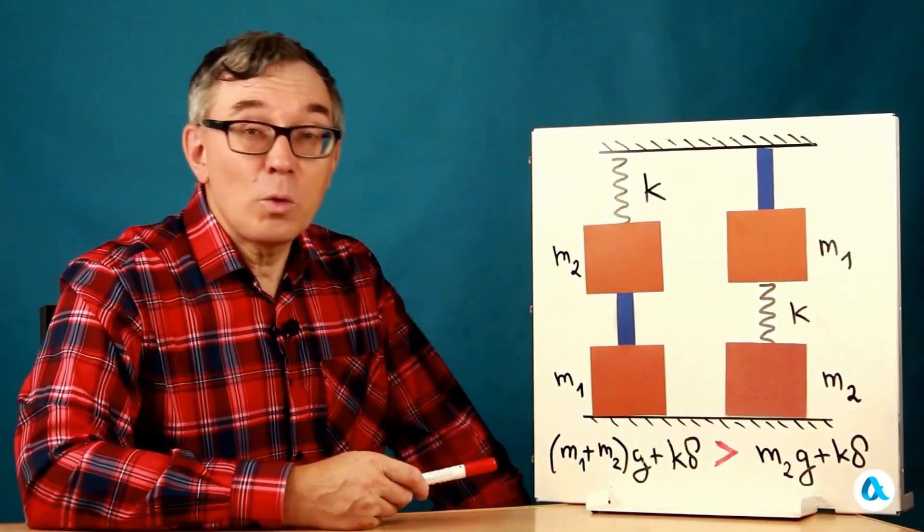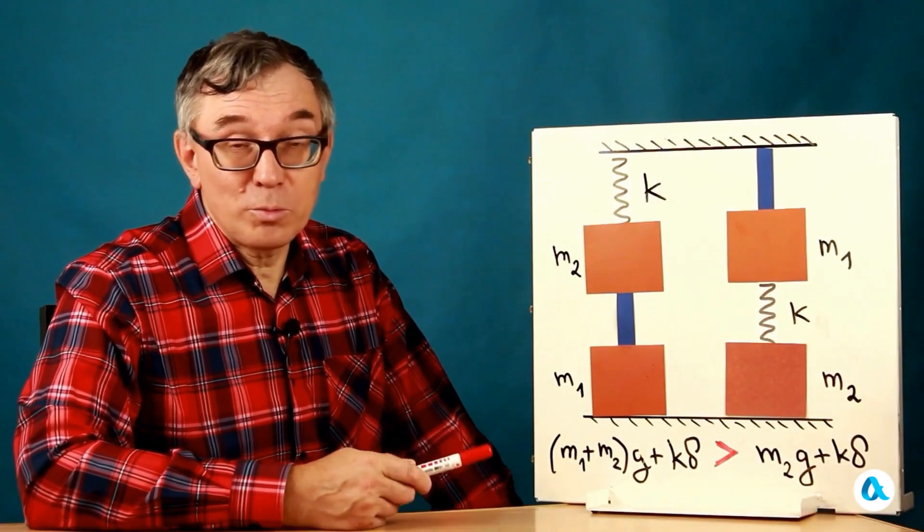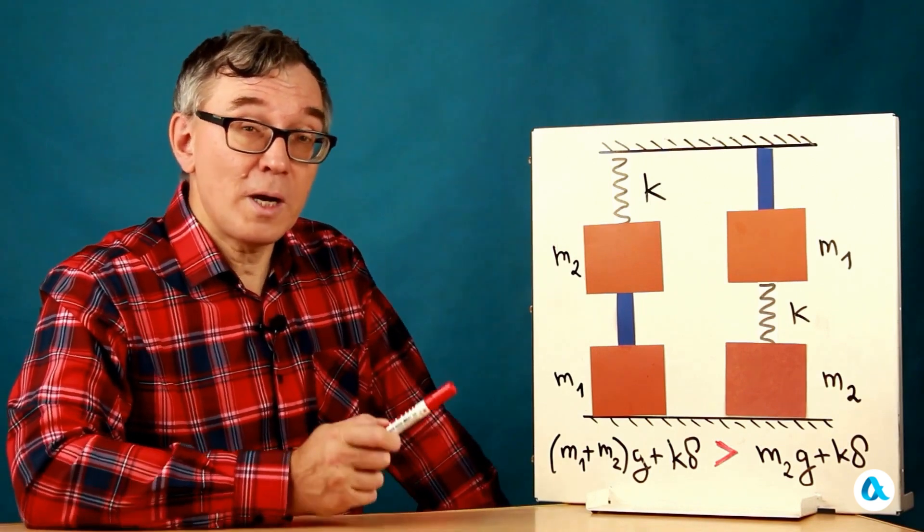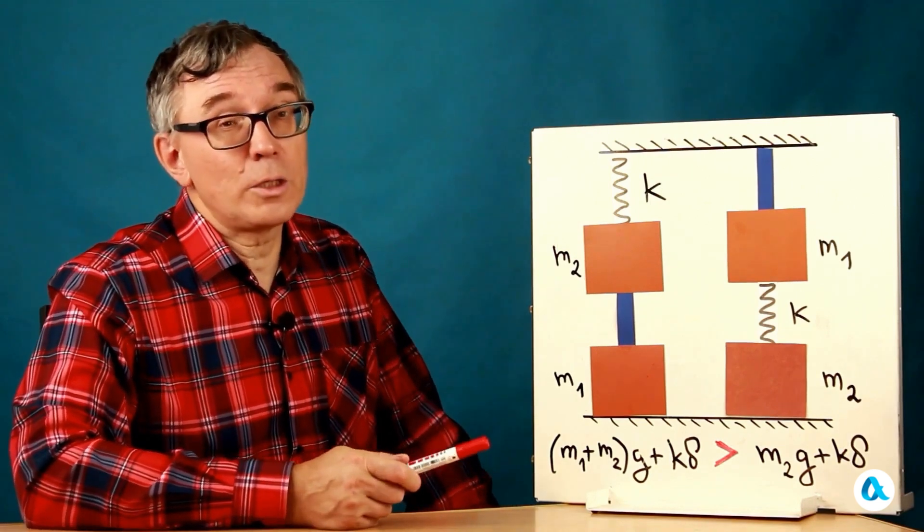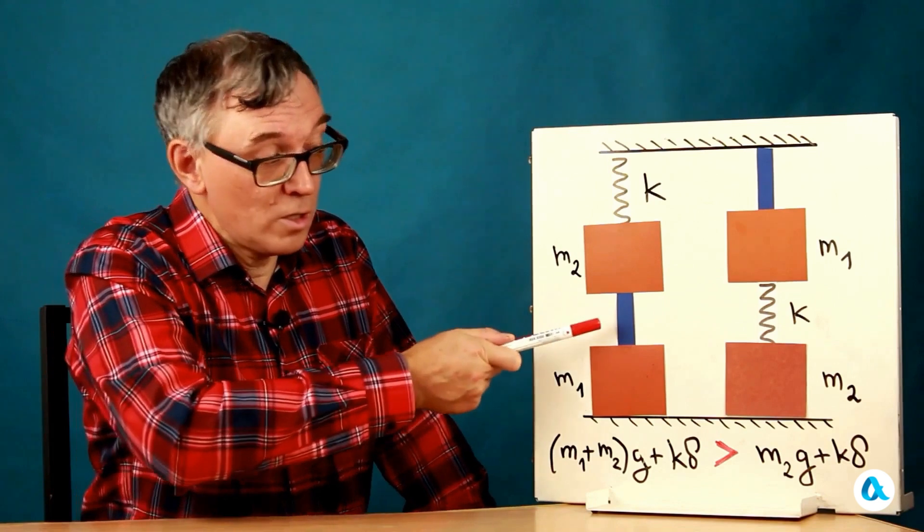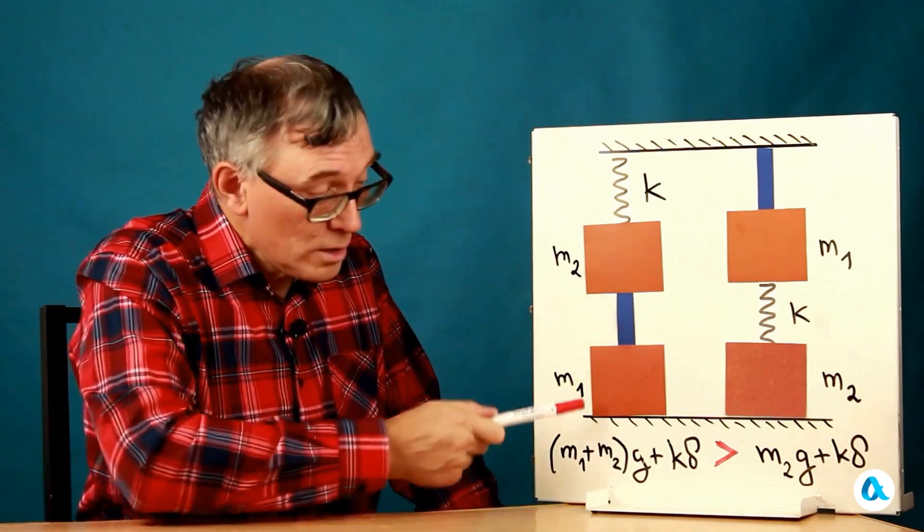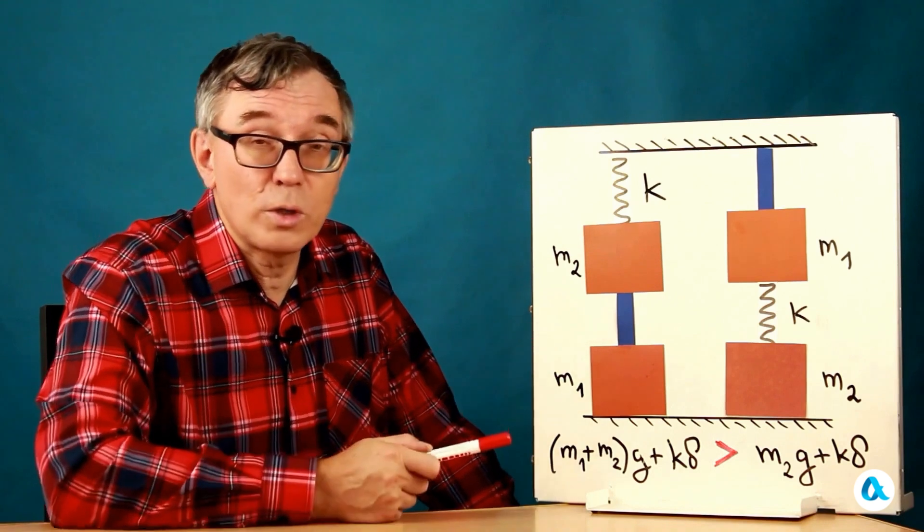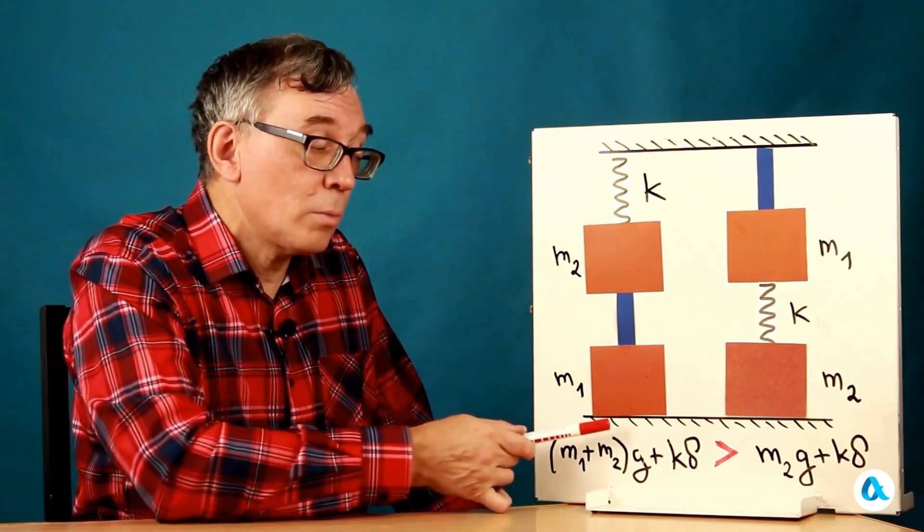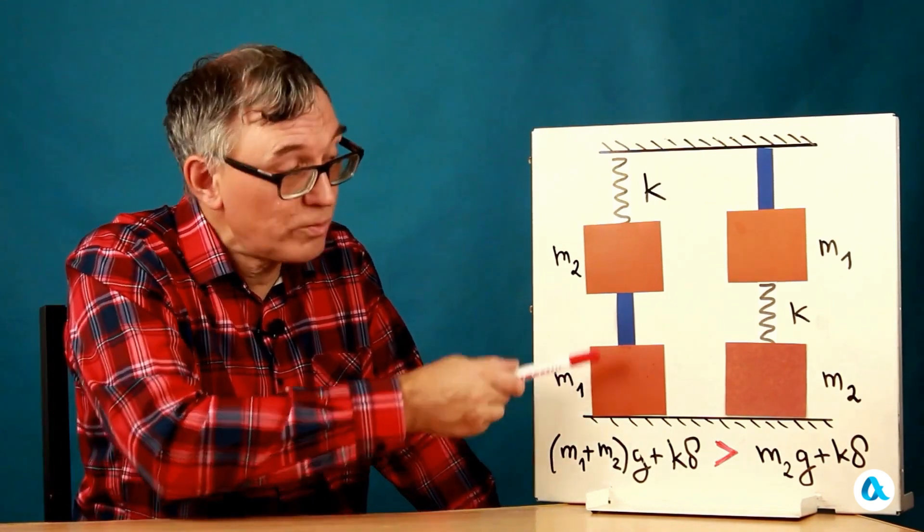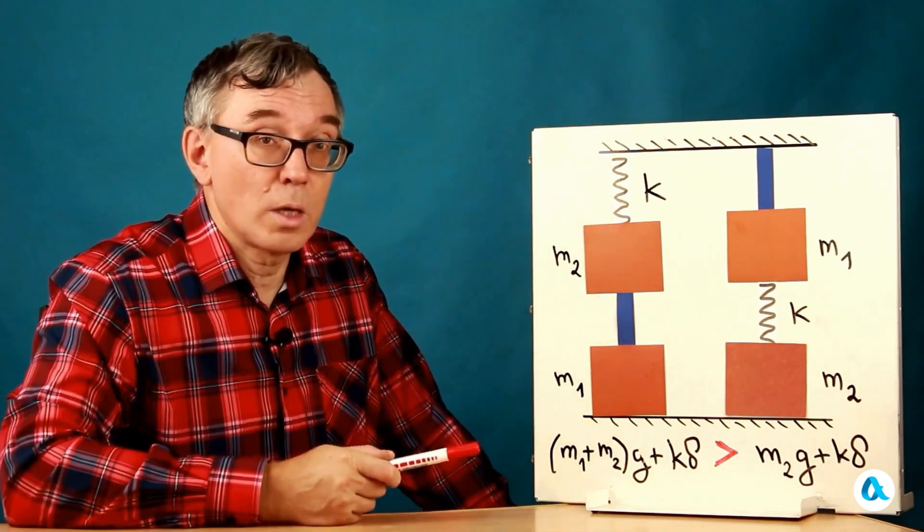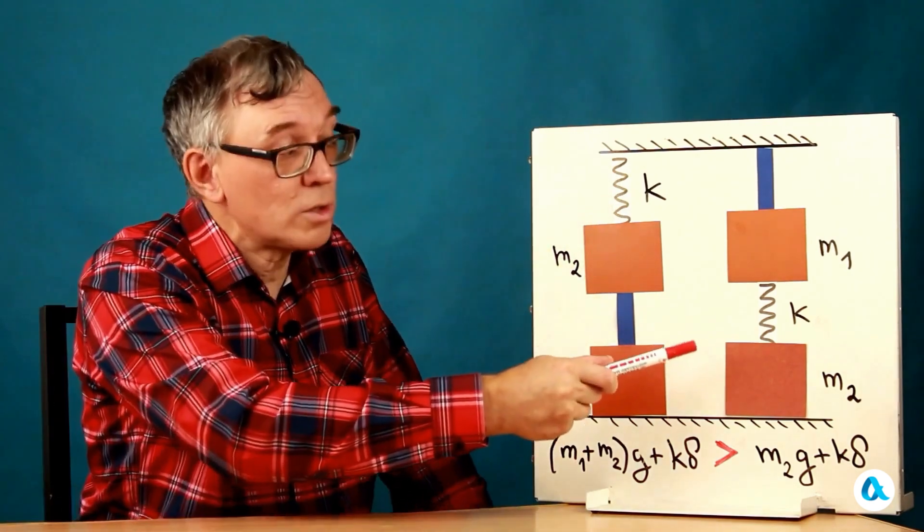And to provide a qualitative explanation I will proceed as physicists do in such situations. We need to simplify the model and consider some limiting case. I will assume that the lower spring in the first situation is very very stiff, which effectively means that a solid rod is inserted here. Then the force exerted on the support will be created firstly by the weight of these two loads and secondly by the pressure of the upper spring.